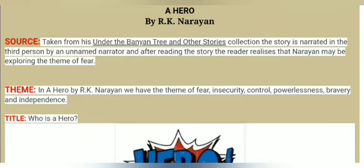Hello students, welcome. Today we are going to study and understand the first chapter of your course book, 'A Hero.' 'A Hero' is written by R.K. Narayana. We are going to look at a few topics on this chapter. The first topic is the source — source means from where the story is taken. There are many novels written by R.K. Narayana, and one of them is 'Under the Banyan Tree and Other Stories.'